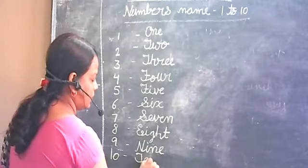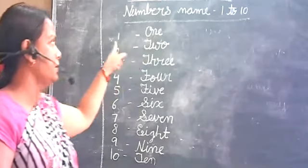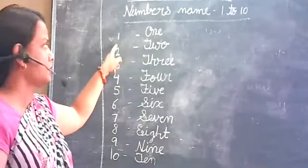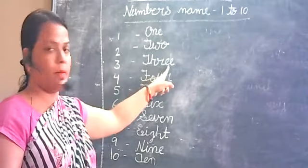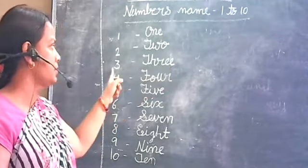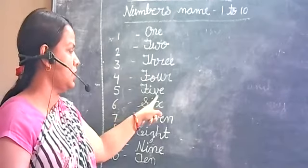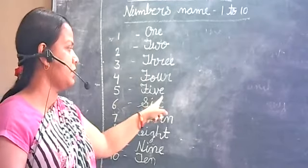Numbers and name. O-N-E. One. T-W-O. Two. T-H-R-E. Three. F-O-U-R. Four. F-I-V-E. Five.